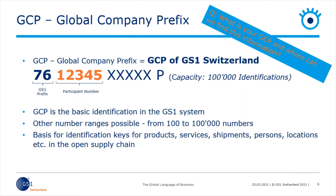Let's start with the GCP. The basis of all identification possibilities is the GCP, Global Company Prefix. Sometimes this is also called GS1 Company Prefix. You receive this number with a membership of GS1 and if you buy a number range. The GCP is between 7 and 11 digits long in Switzerland, and it depends on which number range you have licensed.